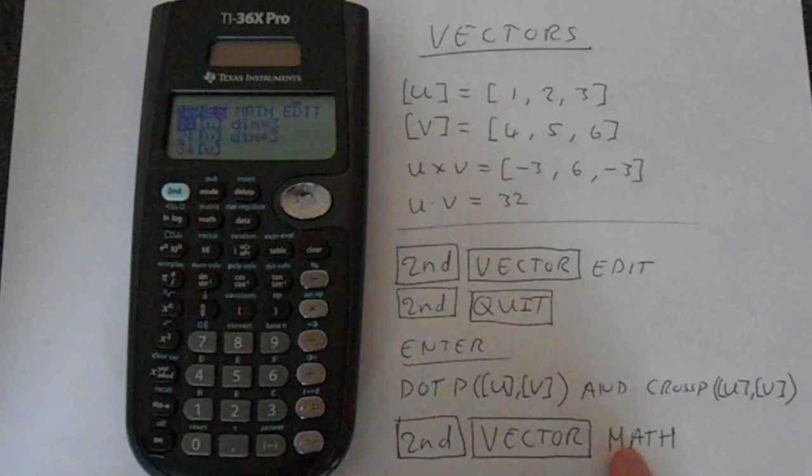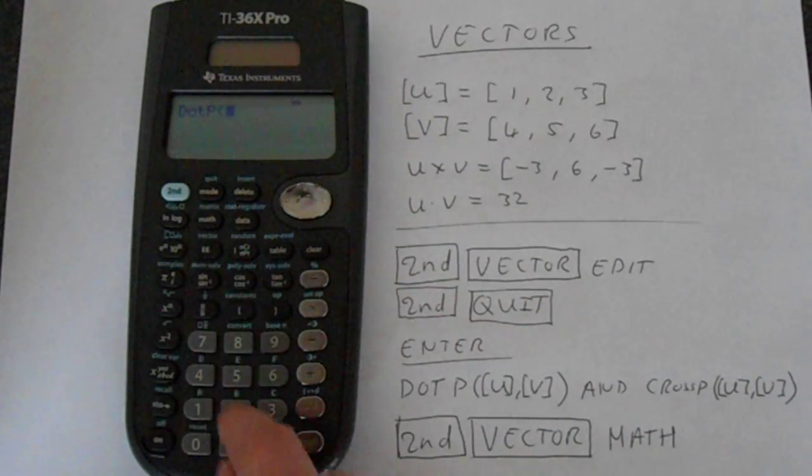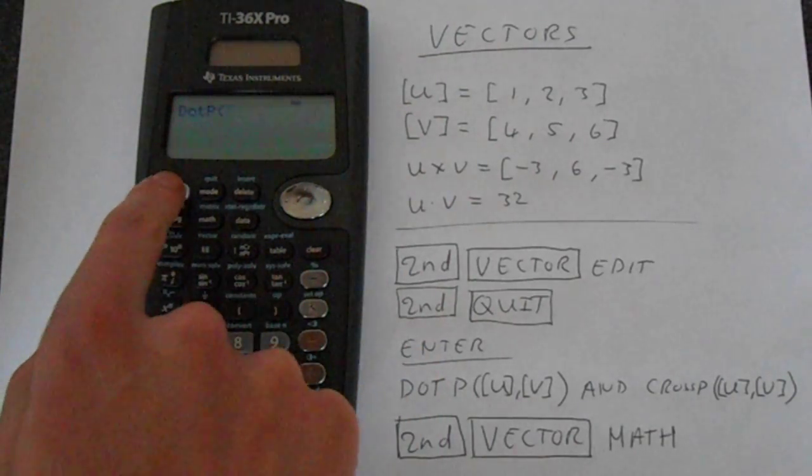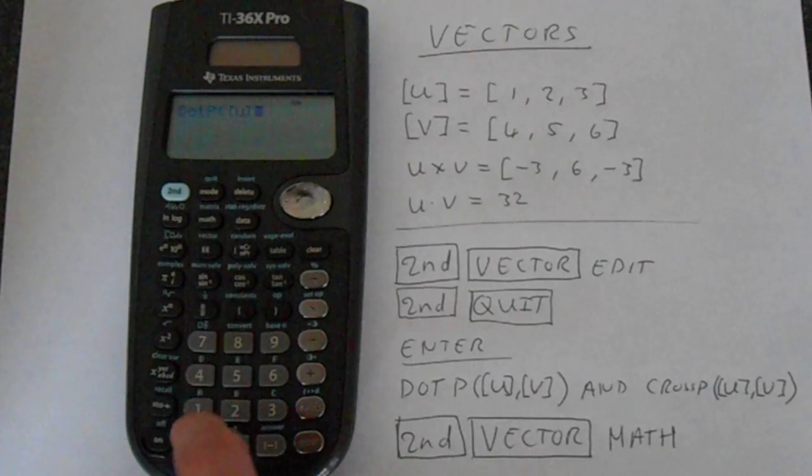So you've got second function, vector, and then under math, you've got these functions. So 1 gives us the dot product, and so we have to go back into vector. You should see an easy pattern here. And then 1 gets us that.